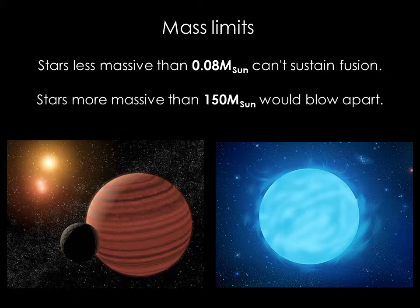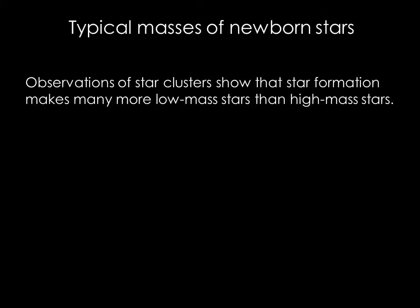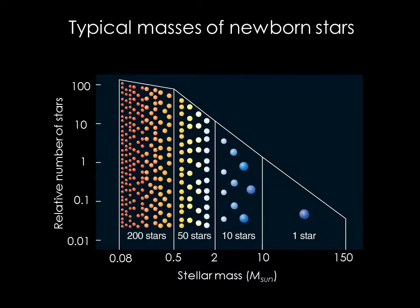In summary, stars less massive than 0.08 solar masses can't sustain fusion, and stars more massive than 150 solar masses are likely to blow apart. Observations of star clusters show that star formation makes many more low-mass stars than high-mass stars. This schematic shows how many stars of each mass are produced for every star greater than 10 solar masses. Very massive stars are relatively rare and lower-mass stars are common.